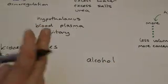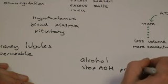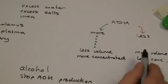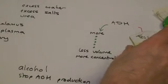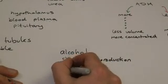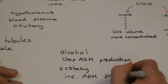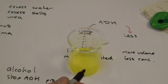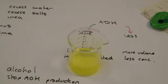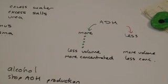We can affect how much ADH is produced by certain drugs. Alcohol, for example, will stop you producing ADH or certainly reduce it. As a result, if you're not producing as much ADH, you get more urine and it's more dilute — which is why we tend to associate alcohol with going to the toilet more. Other drugs, specifically ecstasy, will increase ADH production. As a result, you would get more concentrated urine and tend to hold on to water. This is one of the potential dangers of ecstasy — the body retains too much water, which can be as dangerous as losing too much water.